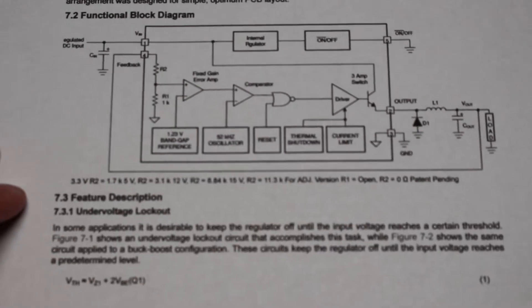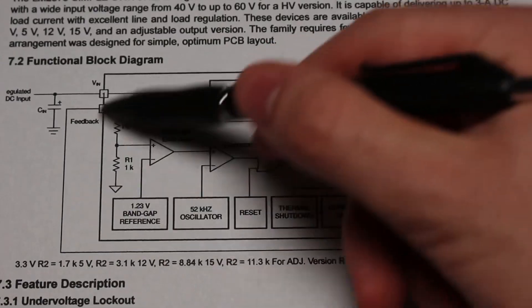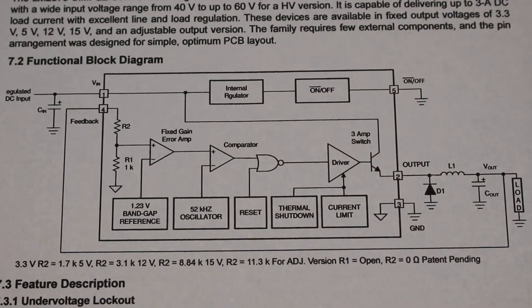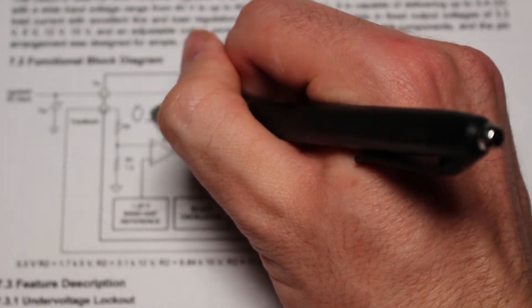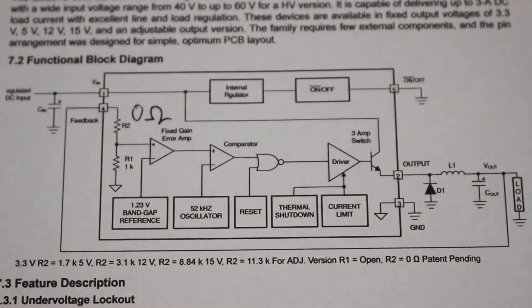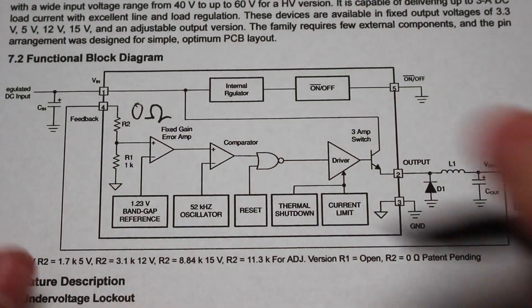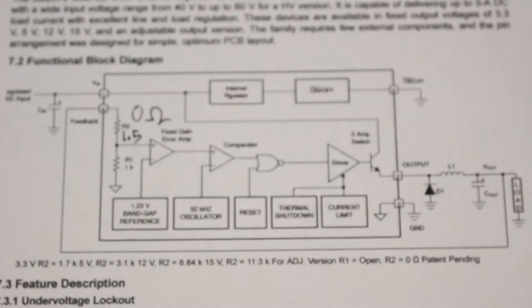So to learn more about how the feedback system works, let's take a look at the IC's block diagram. Starting with the feedback pin, we can see that it directly connects back to the voltage output. Internally it is connected to a resistor divider. However, since we have the adjustable version here, R2 is only zero ohms, meaning that we can choose its value externally.